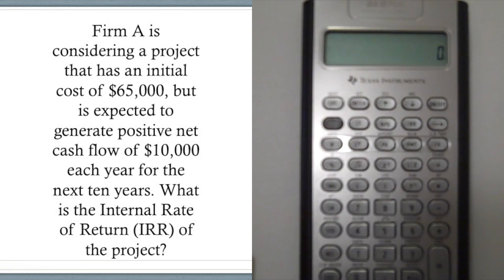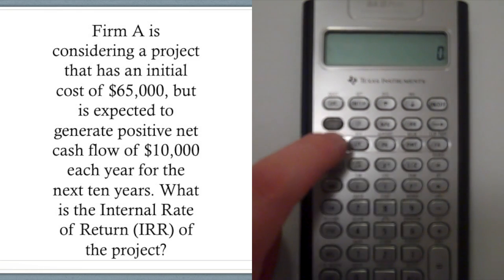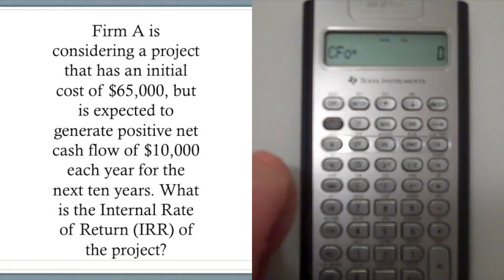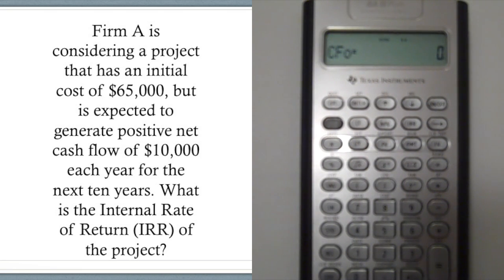Once you have your calculator on, the first step is to click the cash flow button right here next to your second button. The first menu you see is the CF Sub-Zero and you want to enter the cost of the project. This is the first cash flow, so the first cash flow being the cost of the project is $65,000. It's important to remember that this is a negative cash flow though, so we want to make sure that we hit the sign change button at the bottom here.